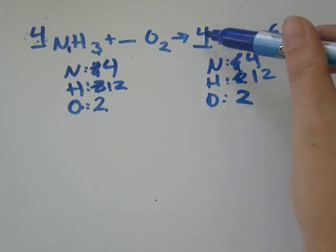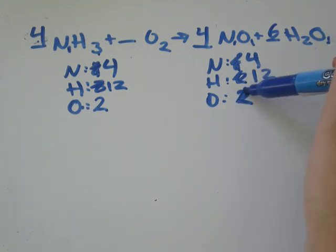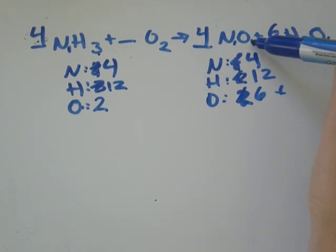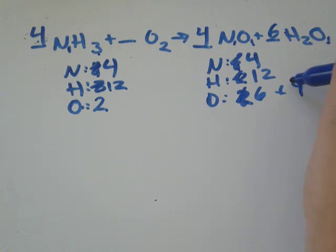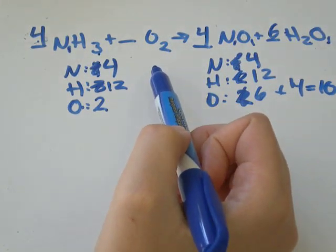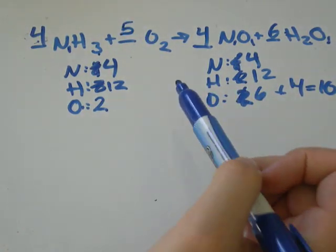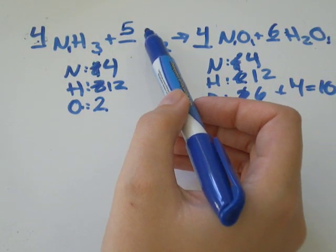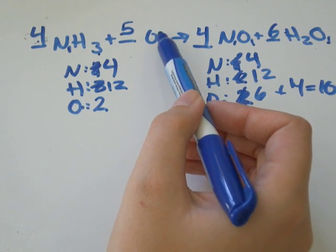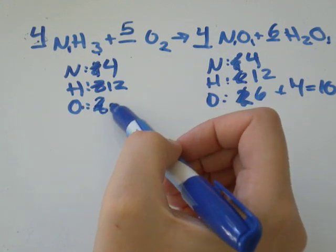So on this side I've got both of my coefficients figured out. Six times my oxygen, I would have six oxygen there, plus four times my one oxygen would be four oxygen with NO. So I have ten oxygen on this side. What coefficient do I need to add onto O2 so that I have ten oxygen? I need to add five. Five molecules of O2. Each molecule has two atoms in it. So my two atoms times five would be ten.